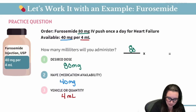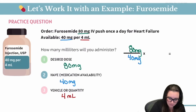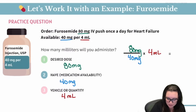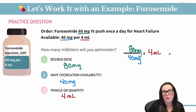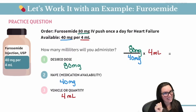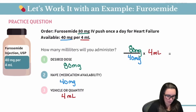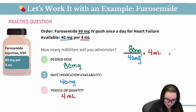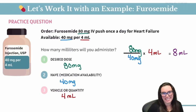Now we're going to start plugging in. I'm going to put my 80 milligrams — that's our desired dose — on top. I'm going to put 40 milligrams, that's what we have available, on the bottom. And then our vehicle or quantity — we know it's available in 4 mLs. We have 80 divided by 40 multiplied by 4, giving us the correct answer of 8 mLs.